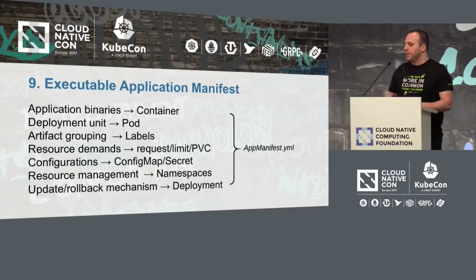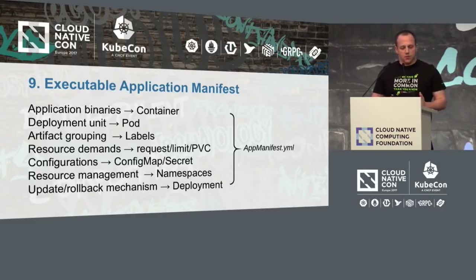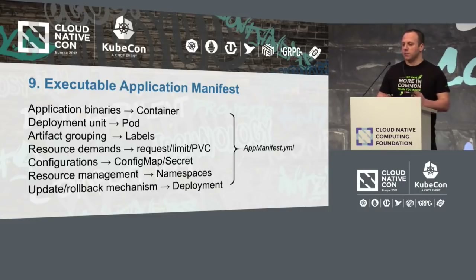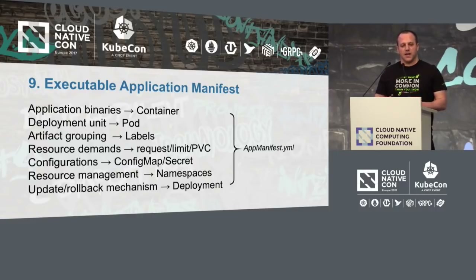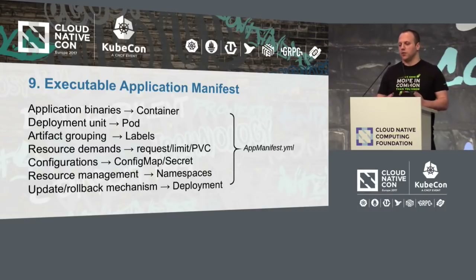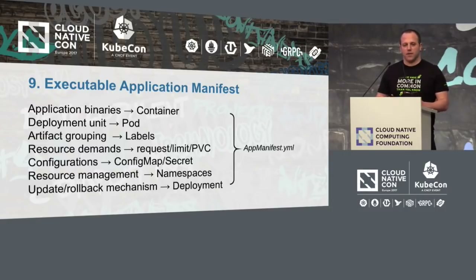An important point: all the topics we've discussed so far can now be expressed as executable application manifests in a YAML file. In the traditional world, all that knowledge would be scattered across different wiki pages and runbooks — some in the heads of developers, some in the heads of ops people. Now all of that can be written down as an executable file from early stages and tested across all environments.